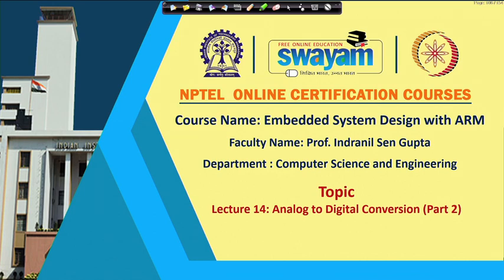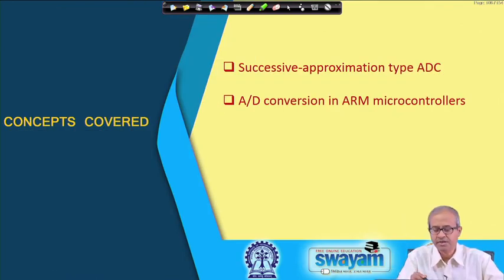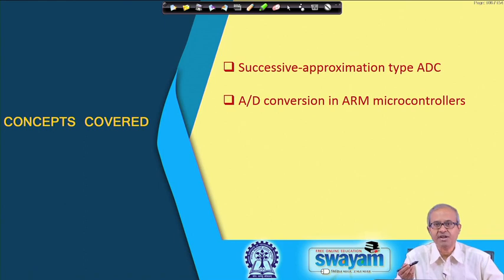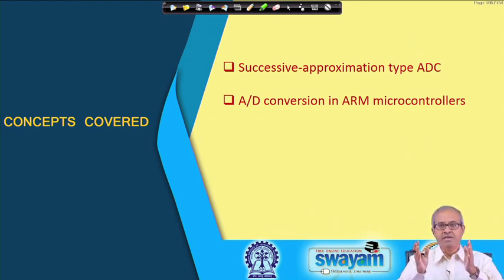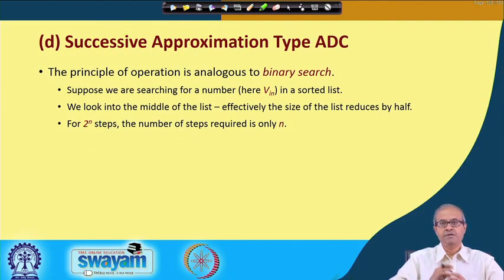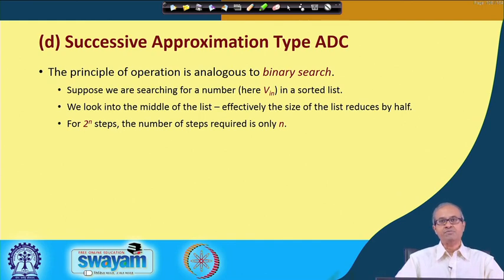We continue with a discussion on Analog to Digital Conversion. This is the second part of the lecture on Analog to Digital Converter. In this lecture we shall first be talking about another kind of AD converter which is similar to the counter type or tracking type AD converter discussed in the last lecture, but is much more efficient in terms of conversion time. This method is called the successive approximation type AD converter.